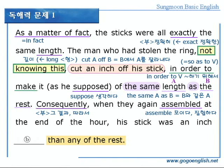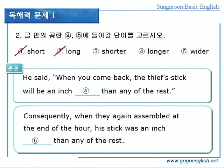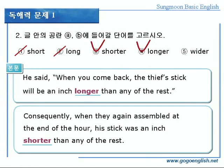그럼, 여기 blank는 답이 쉽게 나오니까, 2번 문제를 먼저 풀어볼까요? 앞에서 1인치를 잘라냈다고 했으니까, 나머지 막대기들보다 당연히 1인치 더 짧아졌겠죠? 일단 빈칸 b에는 shorter, 3번이 답이 되겠네요. 그럼, 앞에 빈칸에 알맞은 말은, 범인이 1인치를 잘라낸 이유겠죠? 그러니까, 반지 주인은, 범인의 막대기는 1인치 더 길어질 거라고 말했음에 틀림없습니다. 그럼, 빈칸 a에는? 그렇습니다. longer, 4번이 답이 되겠습니다.